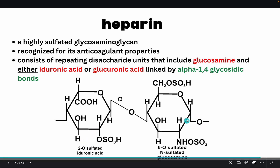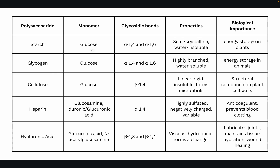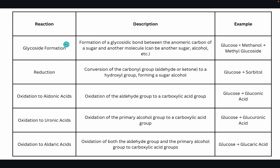Here is a summary table of carbohydrate types — monosaccharides, disaccharides, oligosaccharides, and polysaccharides — including their structures, examples, and functions. Please pause the video to read them. There is also a table comparing the different polysaccharides: starch, glycogen, cellulose, heparin, and hyaluronic acid, showing their monomers, glycosidic bonds, properties, and biological importance. Finally, a table covers monosaccharide reactions: glycoside formation, reduction, oxidation to aldonic acid, oxidation to uronic acid, and oxidation to aldaric acids.